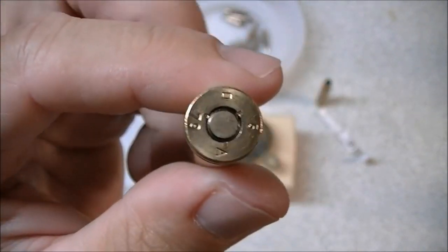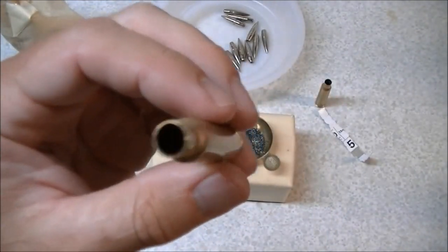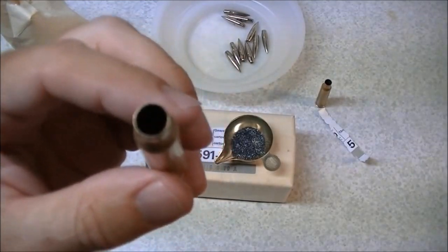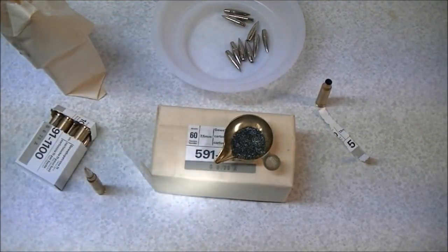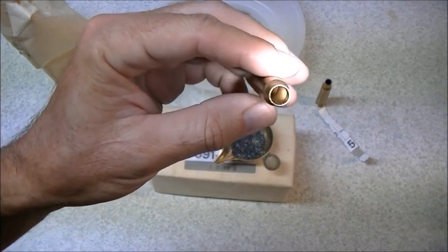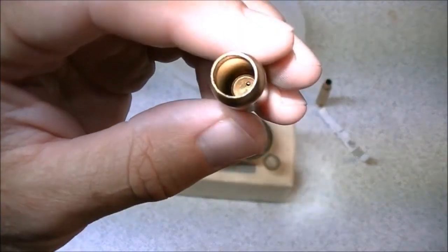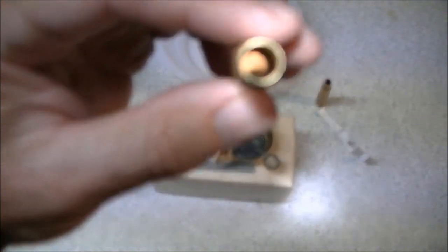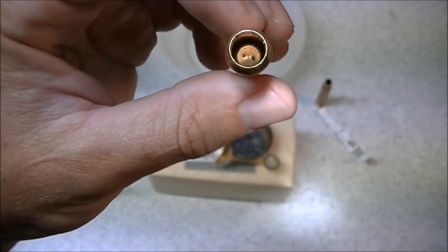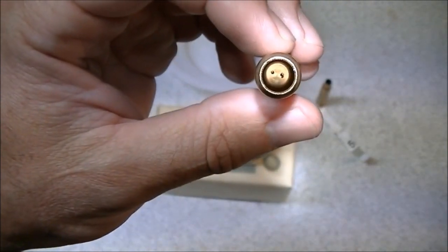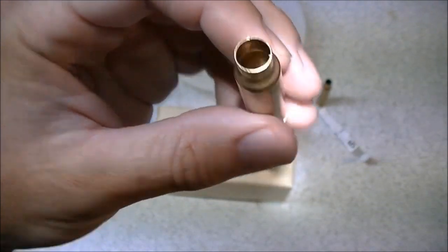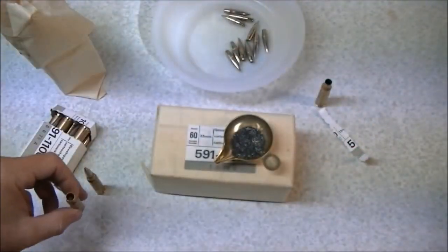I'm going to go get a flashlight here so we can illuminate the inside of the case and show you the inside of the case as well. Okay, I'm back with a flashlight. See if we can get some light inside this cartridge case so we can show you what the inside looks like. That's a pretty good image right there. You can see the two flash holes inside the cartridge case, sure sign that it is a Berdan primed case.